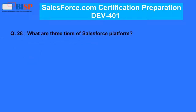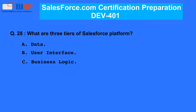Question 28. What are the three tiers of the Salesforce platform? A. Data. B. User Interface. C. Business Logic. D. Meta. E. Training.